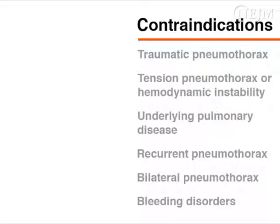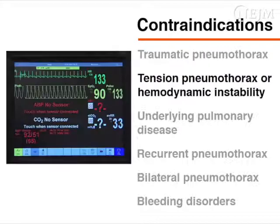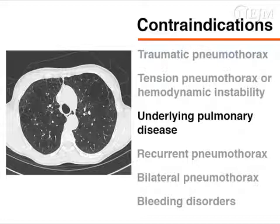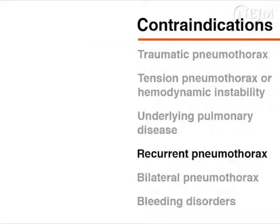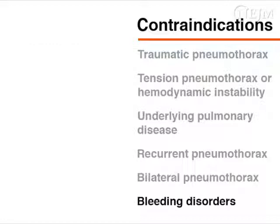Needle aspiration is contraindicated when a patient has traumatic pneumothorax or when tension pneumothorax is suspected. Hemodynamic instability also constitutes a contraindication. You should also avoid using needle aspiration in patients with underlying pulmonary disease, a history of recurrent pneumothorax, bilateral pneumothorax, or a bleeding disorder.